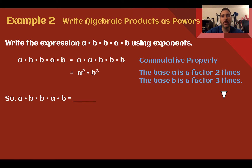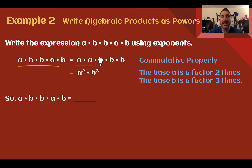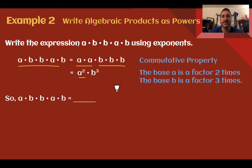Example 2: Write algebraic products as powers. Write the expression A times B times B times A times B using exponents. We can do the same thing we just did with numbers but with variables instead. We can rewrite it using the commutative property to put the letters next to each other. Now I can see that I have two A's, so I can write that as A to the 2nd power, and I have 3 B's, so B to the 3rd power. So my original expression is just A to the 2nd power times B to the 3rd power.